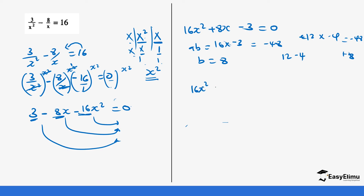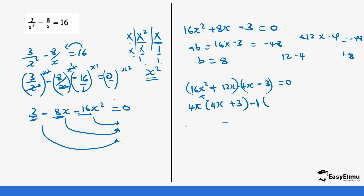Splitting the middle term: 16x² plus 12x minus 4x minus 3 equals zero. Group the first two and last two. The common factor in the first group is 4x, giving 4x(4x plus 3). The common factor in the second group is negative 1, giving negative 1(4x plus 3). So we get (4x minus 1)(4x plus 3) equals zero.